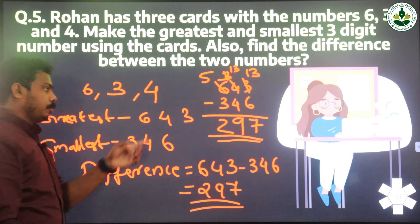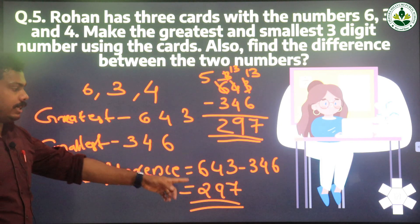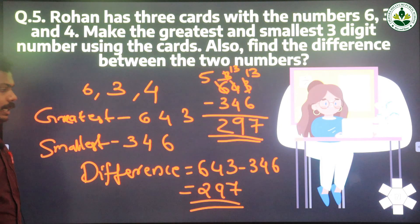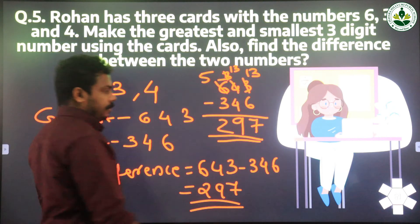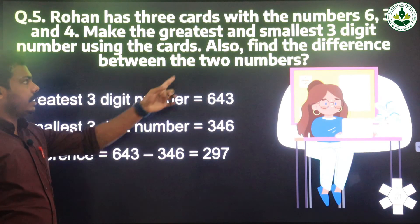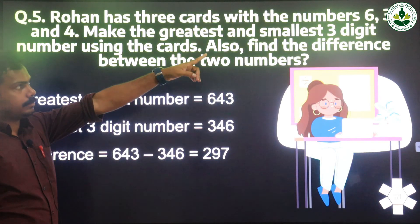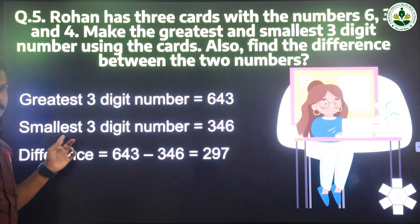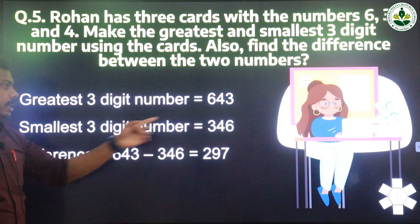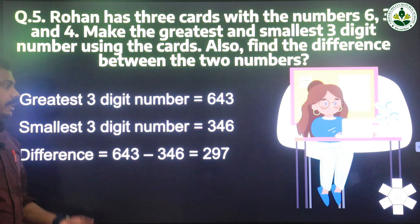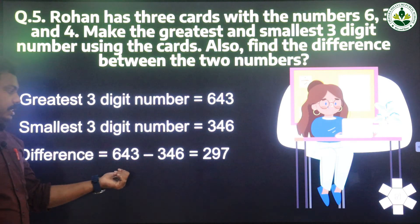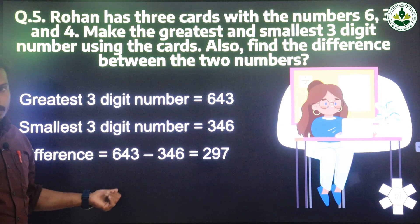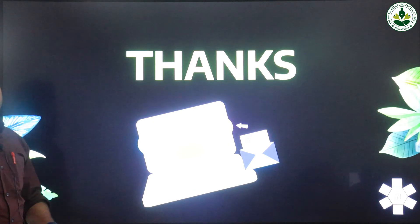The difference between the smallest and the greatest number is 297. The greatest 3-digit number we can make from digits 6, 3, and 4 is 643, and the smallest number is 346. The difference is 643 minus 346, that is 297.